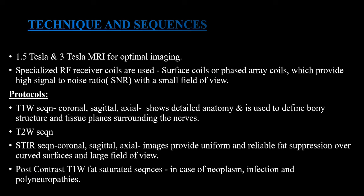For technique and sequence, we mainly use 1.5 Tesla and 3 Tesla MRI for optimal imaging. Specialized RF receiver coils are used — surface coil or phased array coil — which provide high signal-to-noise ratio with a small field of view. The protocol mainly includes T1-weighted sequences in coronal and axial planes, which show detailed anatomy and are used to define bony structures and tissue planes surrounding the nerve. T2-weighted and STIR sequences in coronal, sagittal, and axial images provide uniform and reliable fat suppression over curved surfaces and large field of view. Post-contrast fat-sat sequences are used in cases of neoplasm, infection, and polyneuropathies.